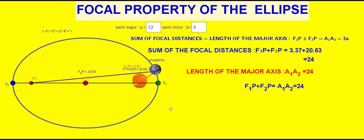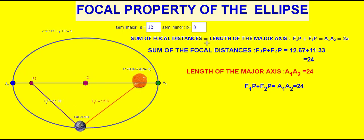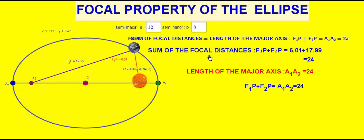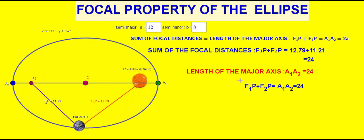by changing the values of semi-major axis a and semi-minor axis b, we can see that sum of the focal distance is equal to the length of the major axis.